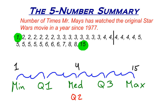In the last video, we took these two values — the 4 and the 4. When you have two numbers in the middle, you find the mean of those two numbers to find your median. In this case, 4 plus 4 is 8, and 8 divided by 2 is 4. So there's our median.